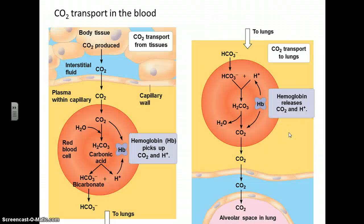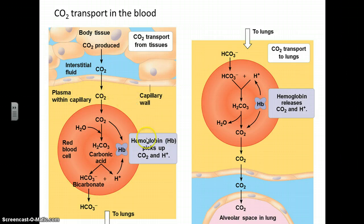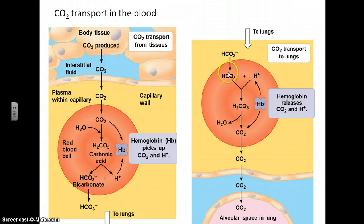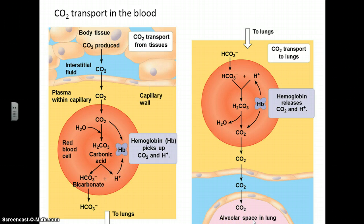Why does blood become acidic when you're exercising? Your cells produce CO2, which is transferred into the blood in the capillary beds — both into the plasma and into the cells themselves. The CO2 interacts with water to produce carbonic acid, which then dissociates and releases a hydrogen ion, producing hydronium and decreasing the pH. In the lungs, the opposite happens: the carbonic acid is broken down back into water and CO2, and that CO2 is released into the alveoli and out of the lungs. So it's the carbonic acid produced that lowers blood pH.